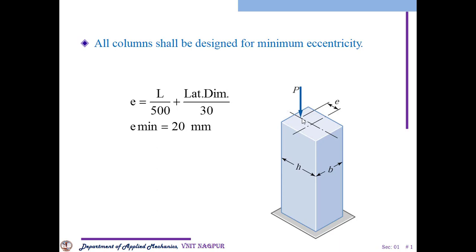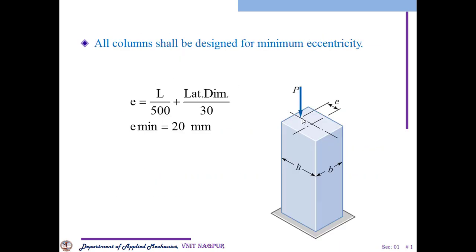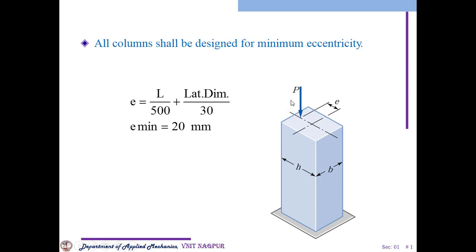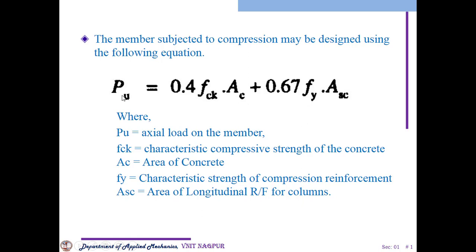The minimum eccentricity assigned by IS code is 20 mm. PU is the factored load, meaning it is multiplied by the 1.5 partial safety factor (or 1.15). The formula given by IS code is: PU = 0.4 fck × Ac + 0.67 Fy × Asc. Here PU is axial factored load, fck is characteristic compressive strength of concrete, Ac is area of concrete, Fy is characteristic strength of compression reinforcement, and Asc is area of longitudinal reinforcement for the column. This formula is only for columns.